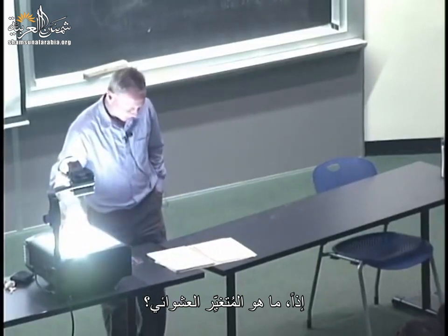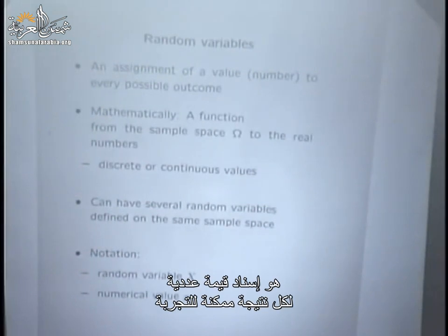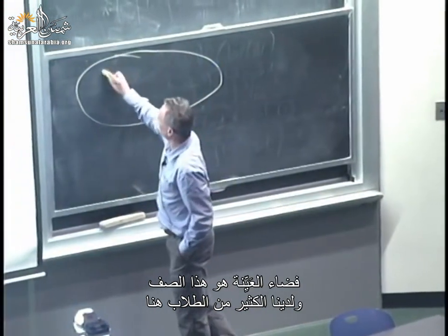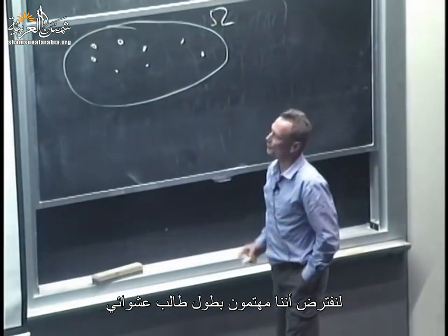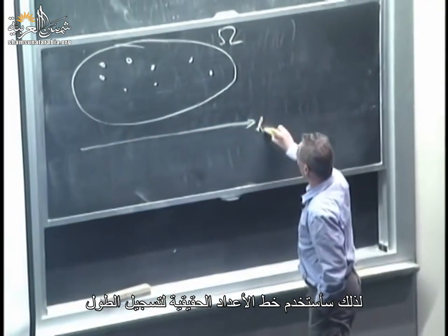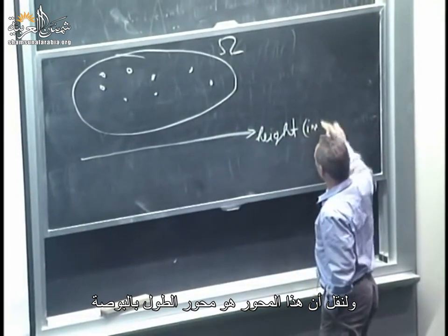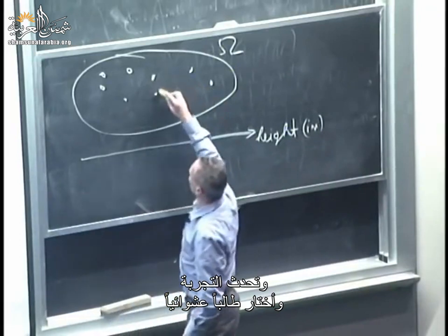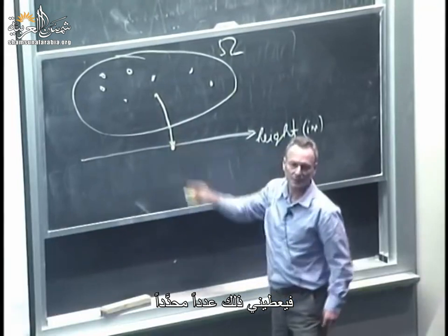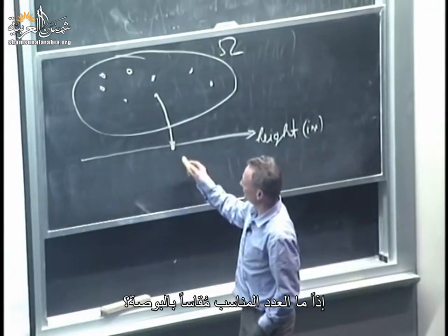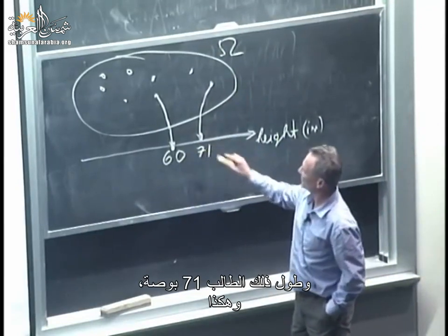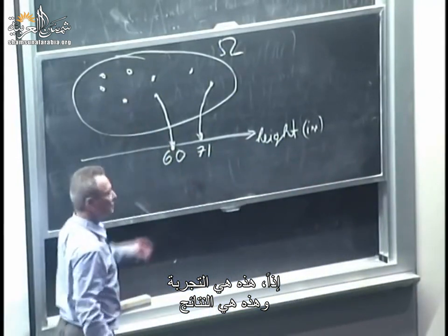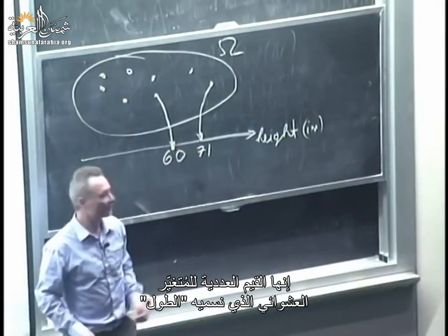So what is a random variable? It's an assignment of a numerical value to every possible outcome of the experiment. The sample space is this class with lots of students. I'm interested in the height of a random student, recording height in inches. The experiment happens — I pick a random student, measure their height, and that gives me a specific number, say 60 or 71 inches.